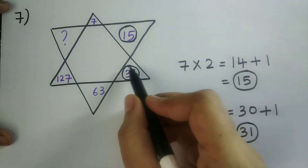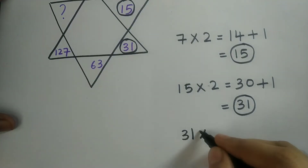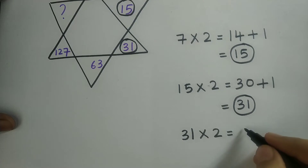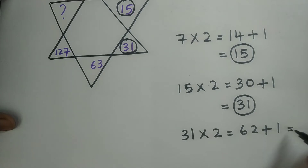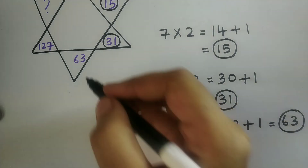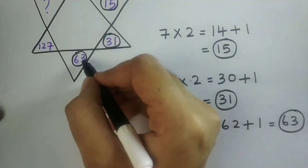Now I should take this value, that is 31. I should multiply with 2, so I will be getting 62. And I should add this with 1. So therefore I will be getting 63. So this value is matching with the next box value.